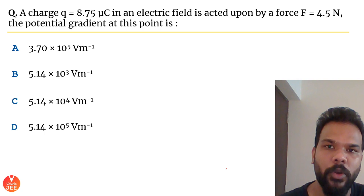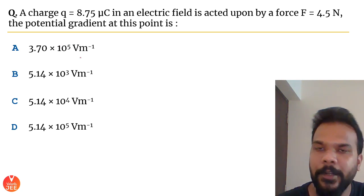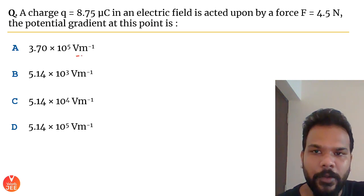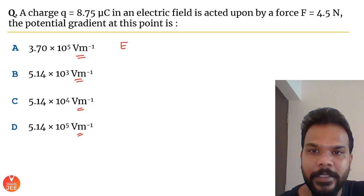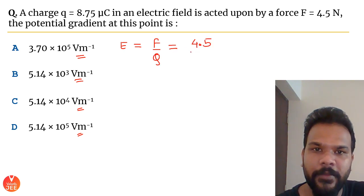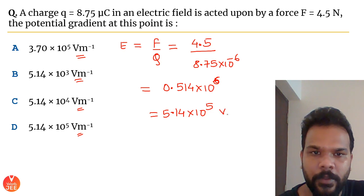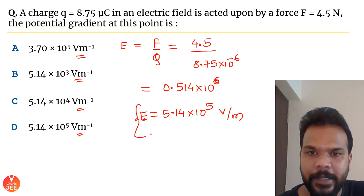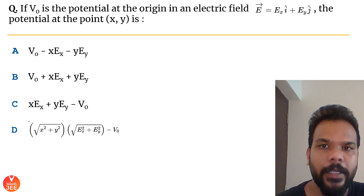Question 10: A charge of 8.75 μC in an electric field experiences a force of 4.5 N. Find the potential gradient. Potential gradient equals the electric field magnitude, which is force per unit charge: E = 4.5 / (8.75×10⁻⁶) = 5.14×10⁵ V/m. The answer is option D.